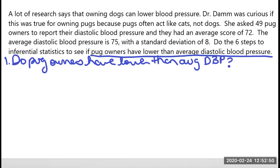Now notice that I did the lower. I am justified in doing that because a lot of research says that owning dogs lowers blood pressure. So we want to make sure that we keep an eye on having previous research. If we don't have previous research, then this research question wouldn't be able to be one tail. But in this case, we're okay with doing lower.